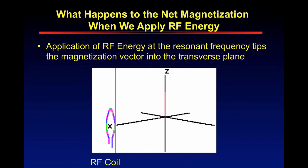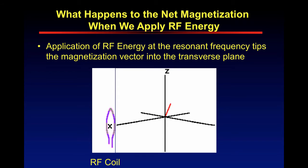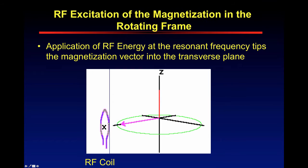What happens when we apply radiofrequency or RF energy? Application of the RF energy at the resonant frequency — the frequency that these protons are precessing — tips the magnetization vector into the transverse plane. So applying the RF pulse is going to tip this into the transverse plane, which is the x-axis. This x is denoted by the RF coil.